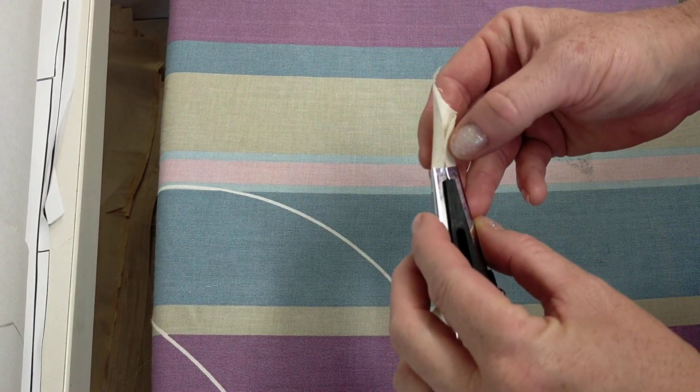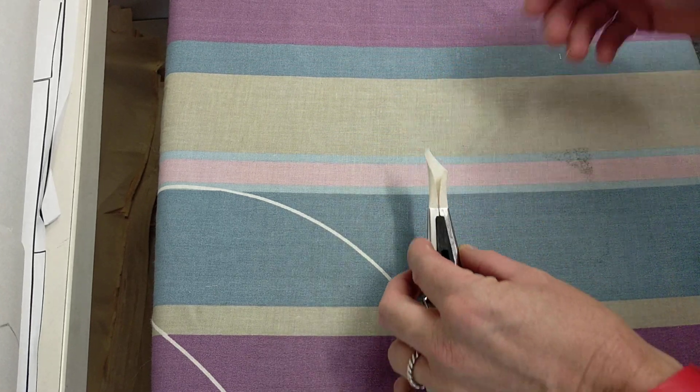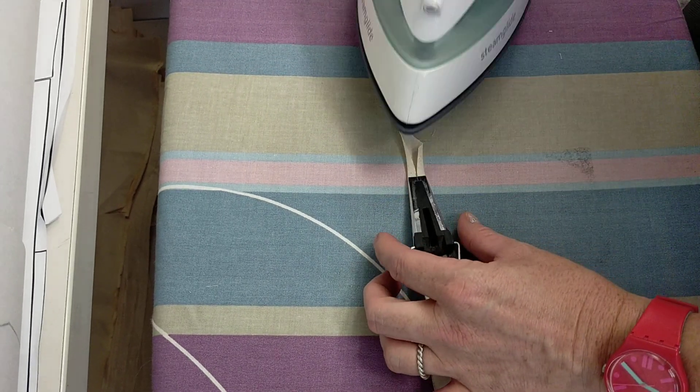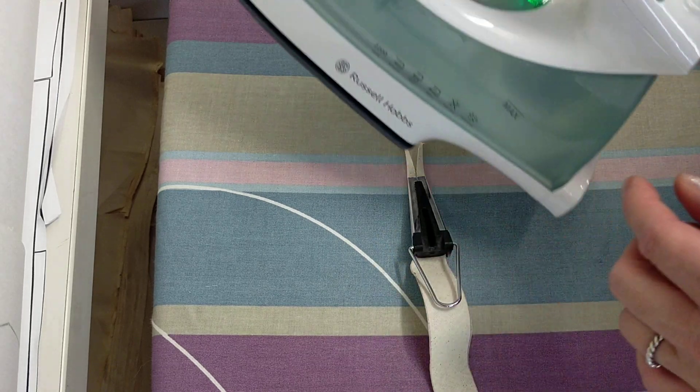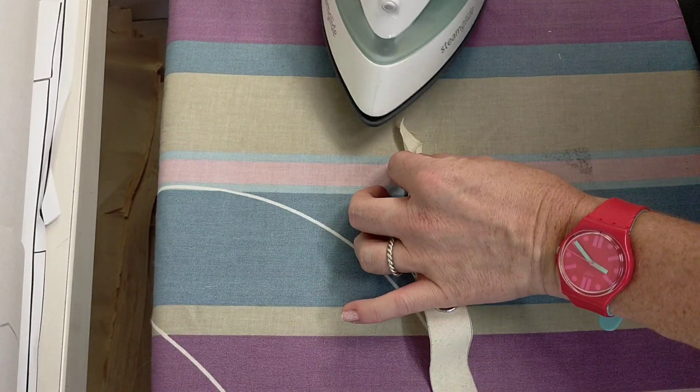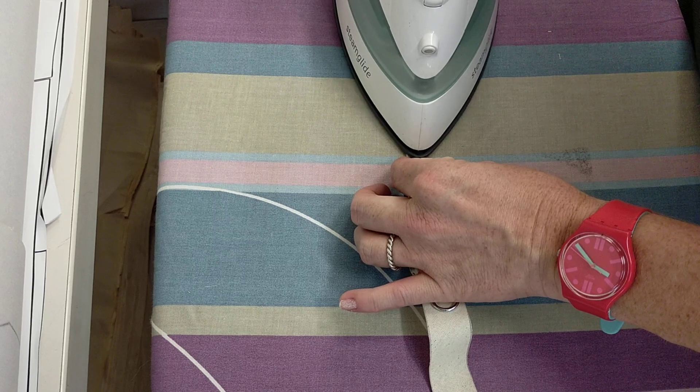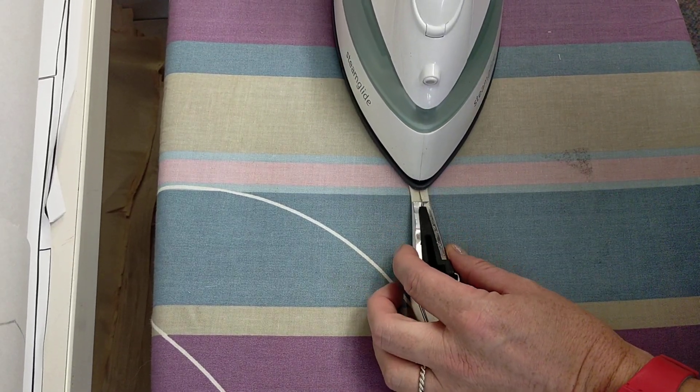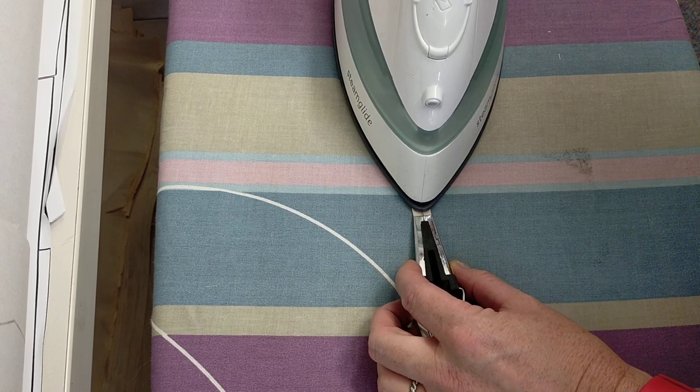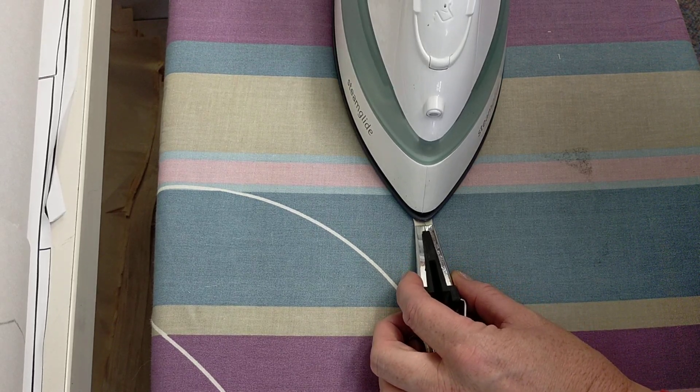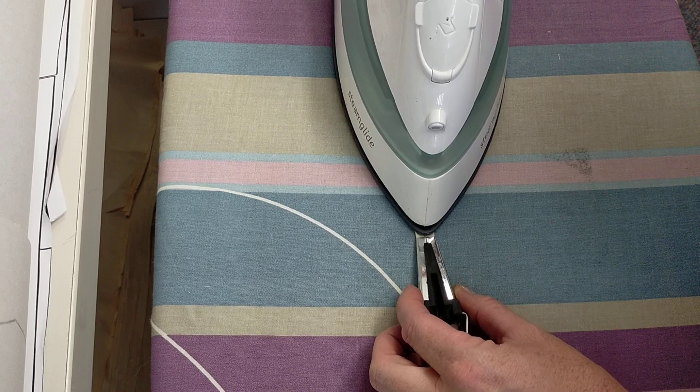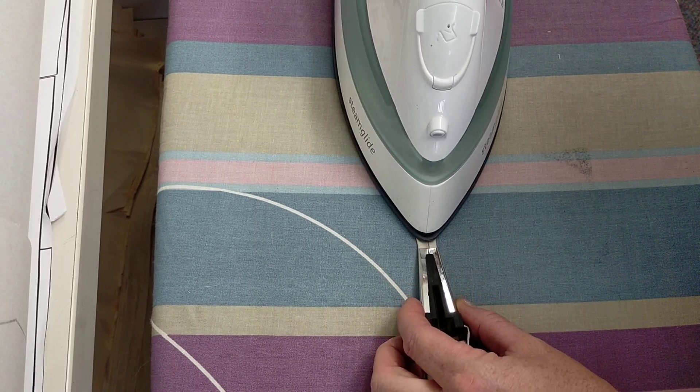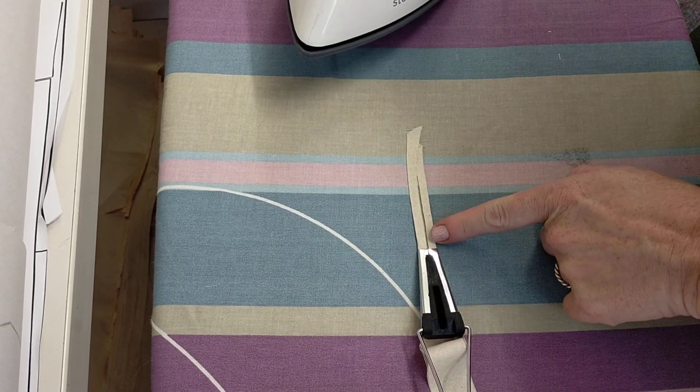So that the folds meet, or the two raw edges meet in the middle. Now what you do is make sure your iron is set to the right setting. So I've got cotton and I've got water, so I've got steam. And going to very gently pull that bias maker along, keeping the tip of the iron really close.